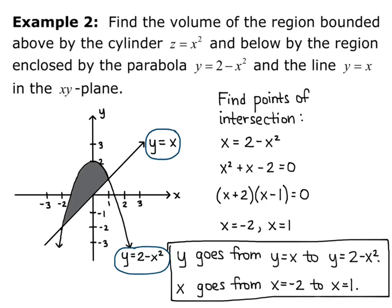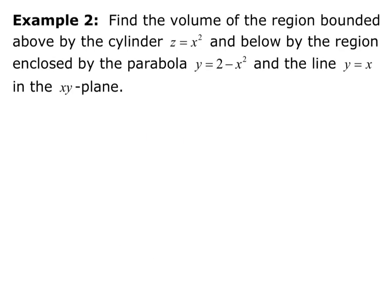So now we can actually set up our double integral for volume using these bounds. Alright, so our volume is going to equal the double integral of x squared, because that's our f of x, y. That was given as z equals x squared. So that's our function.